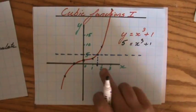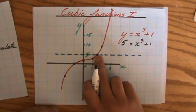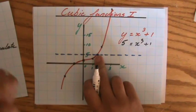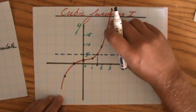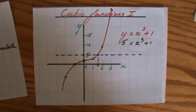Just one solution, one root, because that's the only point of intersection. That's the only time that the y coordinate is 5 when I'm looking at this beautiful cubic curve.